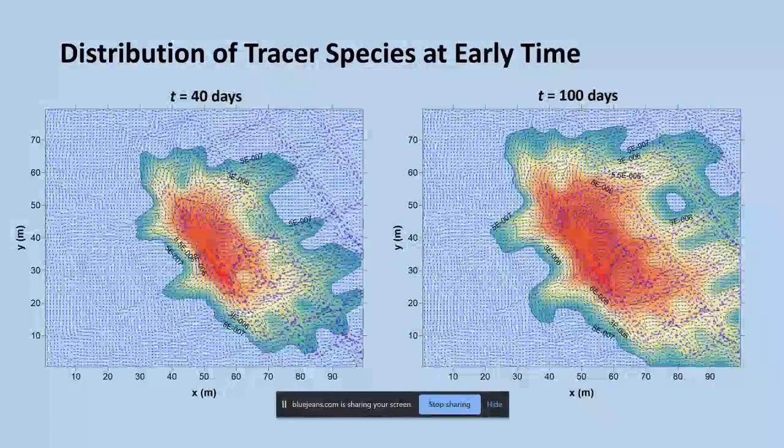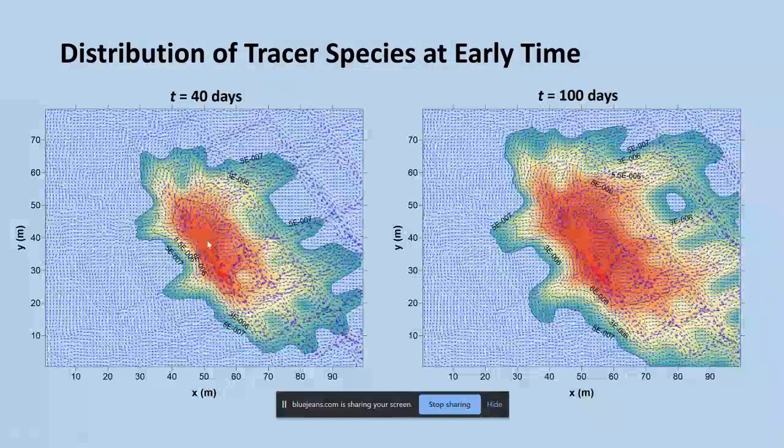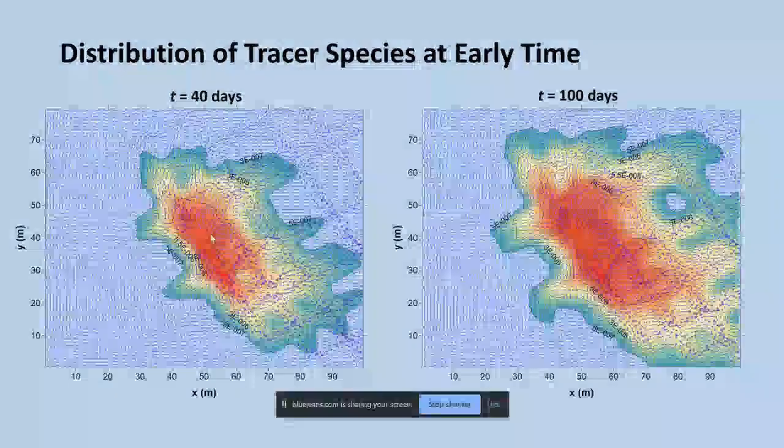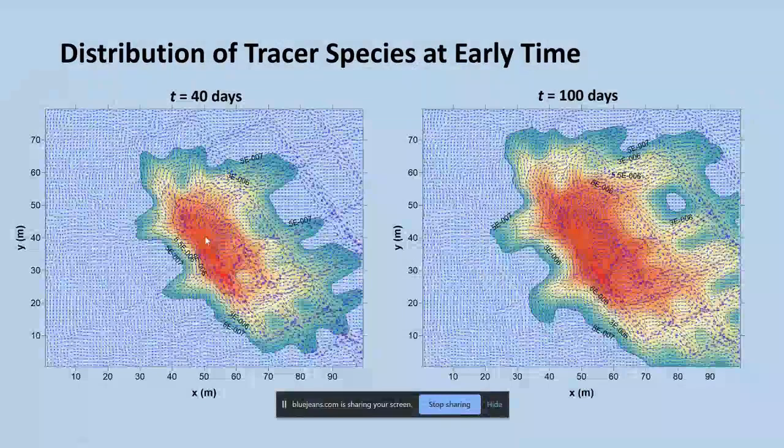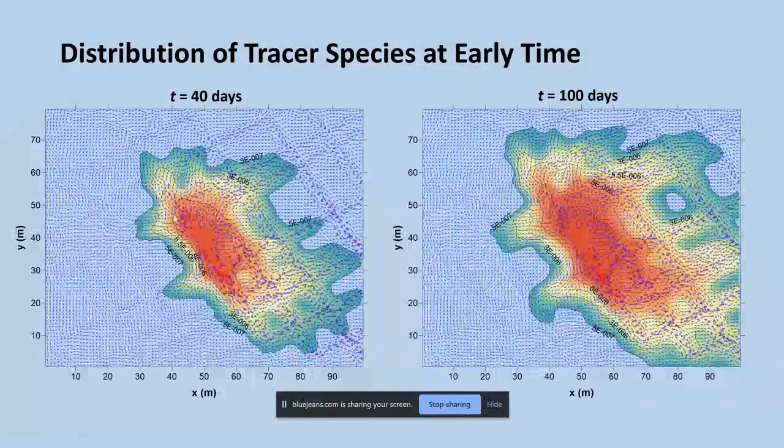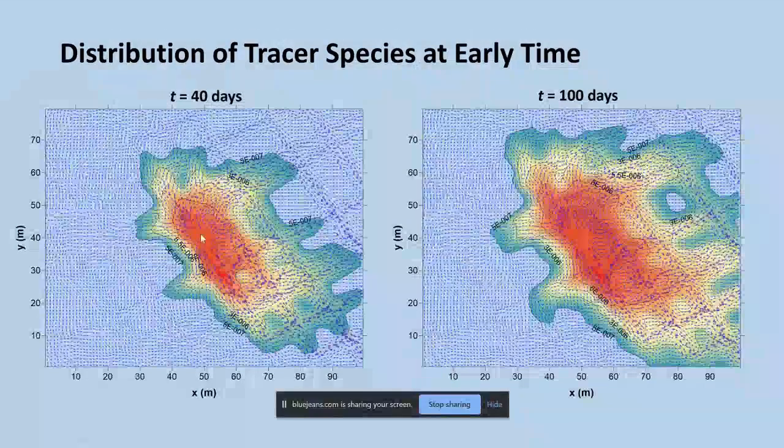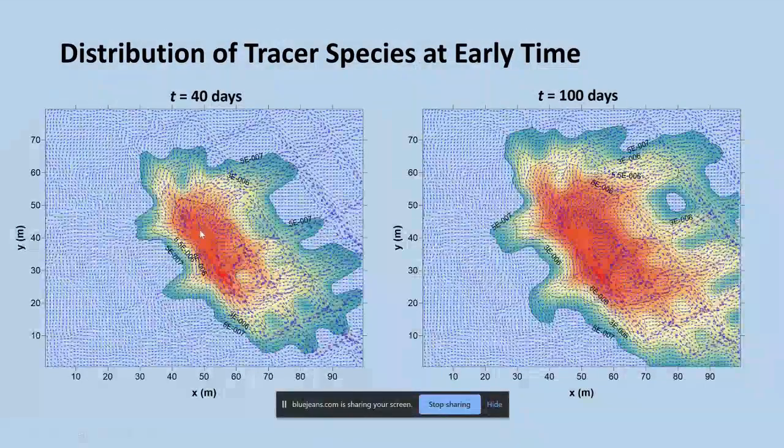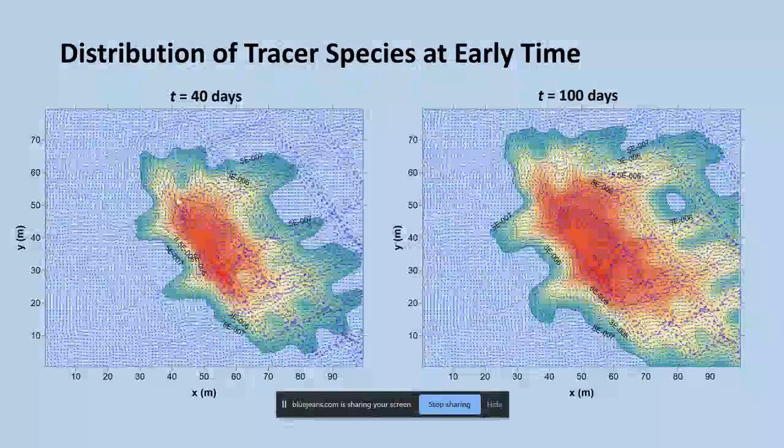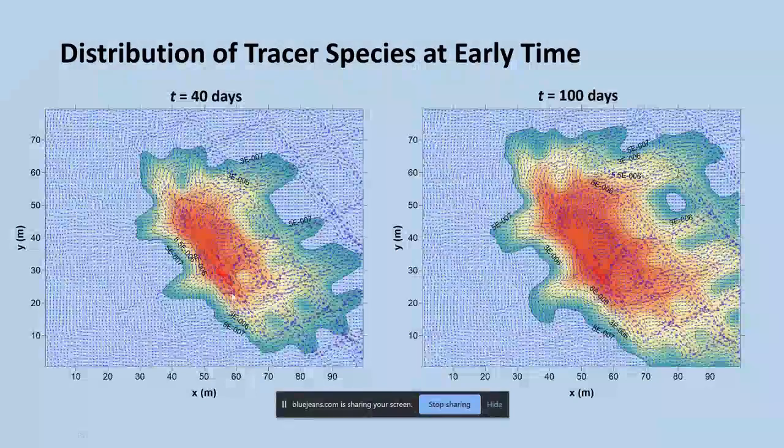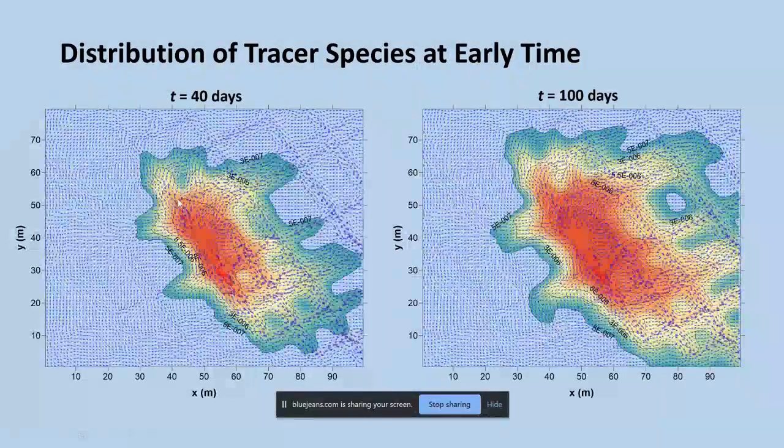The contours on here are color-coded to depict the areas of high concentration and low concentration of bromide. As you can see, the highest concentration of bromide is of course associated with the injection well location, but then you can see bromide following along with the flow paths indicated by the arrows.